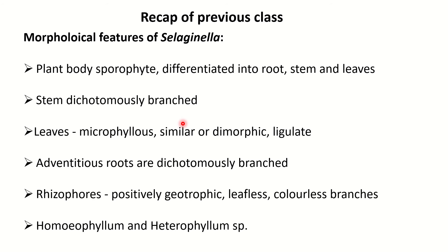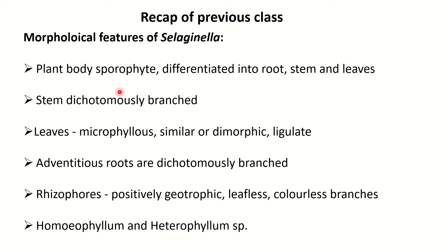Before we study the reproductive features of Selaginella, we must know its morphological features as well. This was done in your previous classes, so just a quick recap. The plant body is a sporophytic one, differentiated into root, stem and leaves. The stem is dichotomously branched — this dichotomy is an important feature.